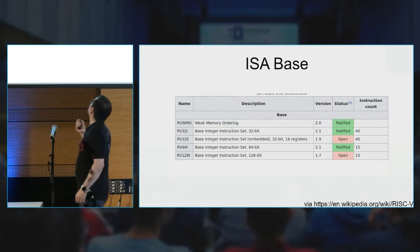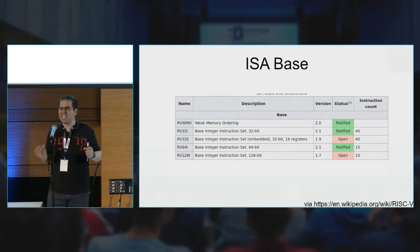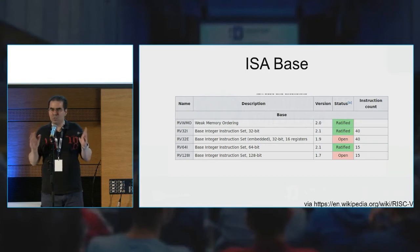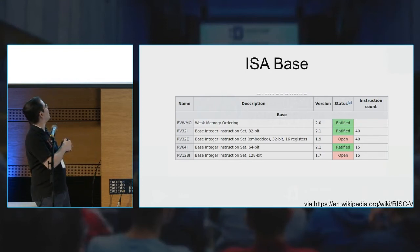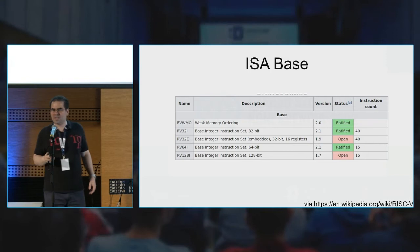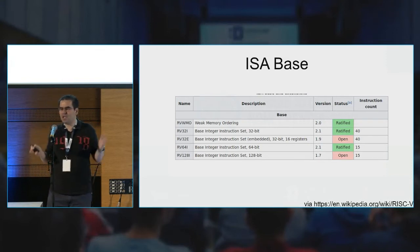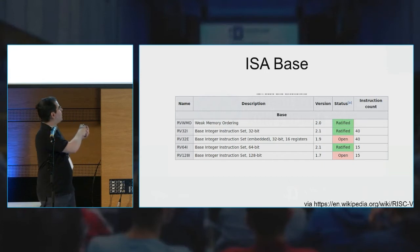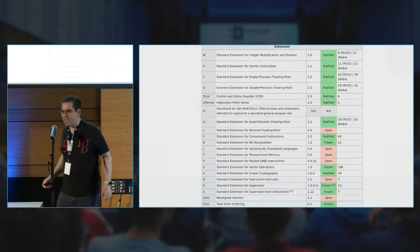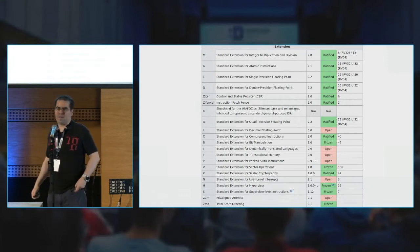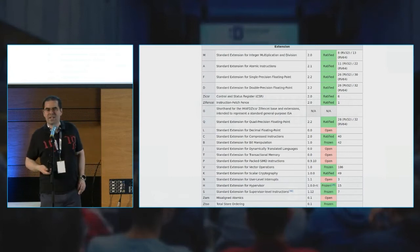Looking at the RISC-V base: a RISC-V chip always is at least 32 bits in word length. There is no 16-bit RISC-V and there never will be. What is available is 32-bit, and also 64 and 128-bit. But in practice, especially for our needs in microcontroller space, it's basically going to be one of those two. As for the extensions, there are literally 50,000 of them, as you can see here.